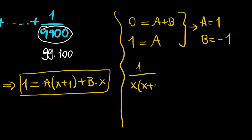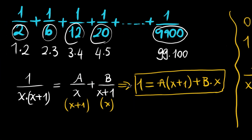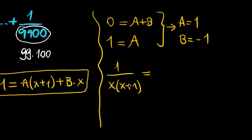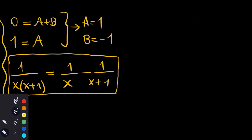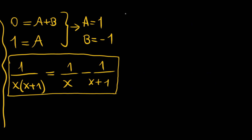So 1 over x(x plus 1) equals 1 over x plus negative 1 over (x plus 1), which is 1 over x minus 1 over (x plus 1). This is the identity we derived, and now we will use it for each fraction in our sum.